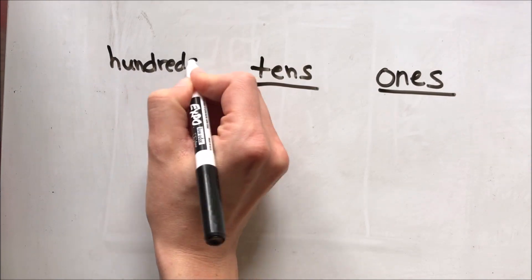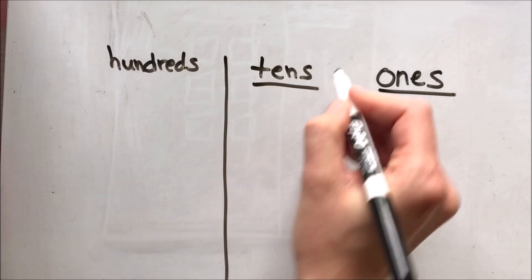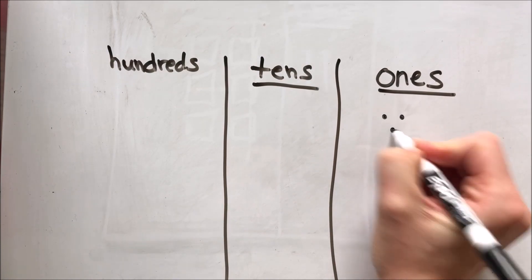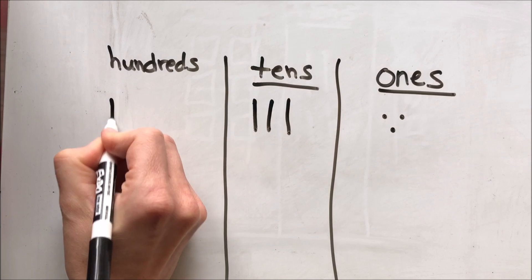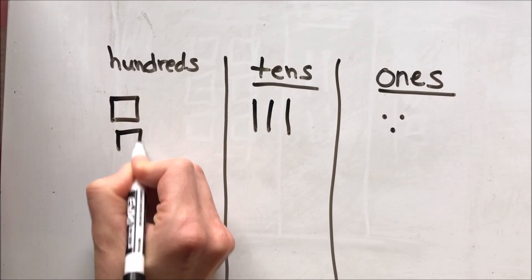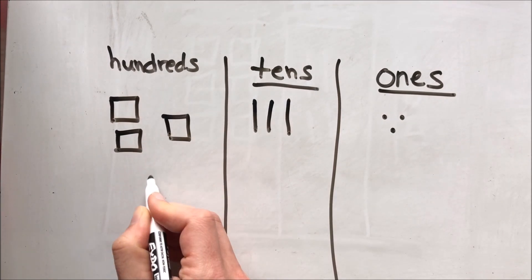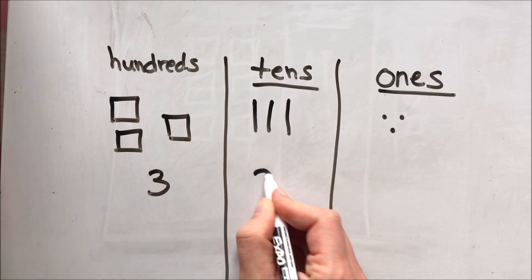And when we represent those numbers in a picture we're going to draw our ones by drawing little dots, our tens by drawing lines, and our hundreds by drawing squares. So this number right here is 333.